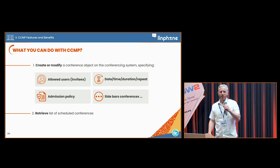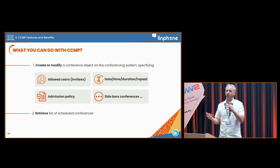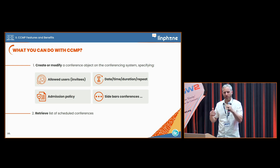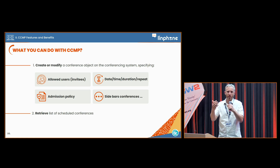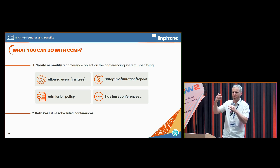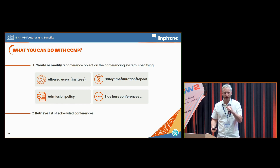One specificity is that they thought about an unusual conferencing feature called a sidebar conference. Imagine you have a main conference with maybe 50 people, and you want to create a second conference with a small set of people who can listen to what is being discussed in the main conference but want to comment privately — what is heard in the sidebar doesn't go back into the main conference. CCMP proposes semantics to realize such a feature.